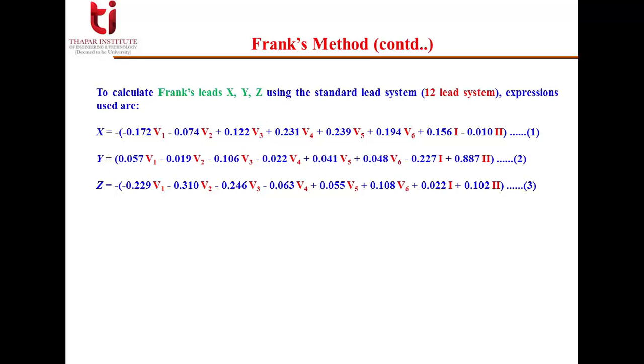Equation 1 is for x, equation 2 is for y, and equation 3 is for z. In these equations you can see we are using V1 to V6 that were the precordial leads, and 1, 2 that are standard limb leads.